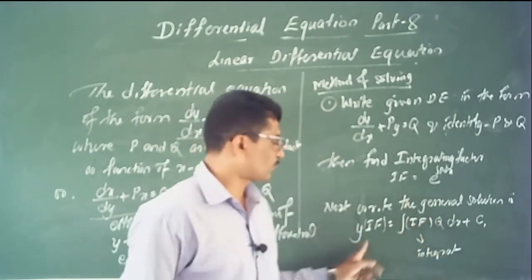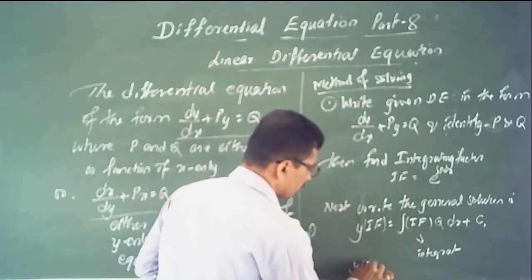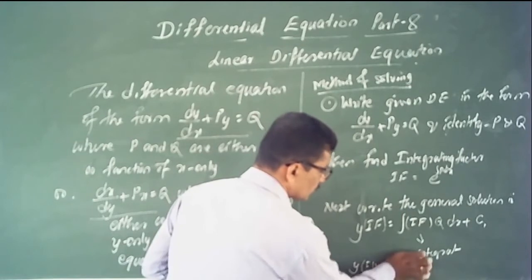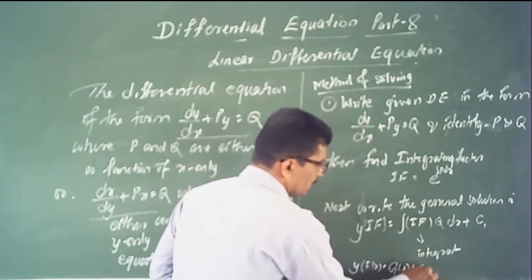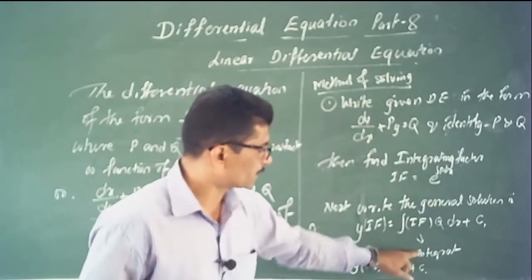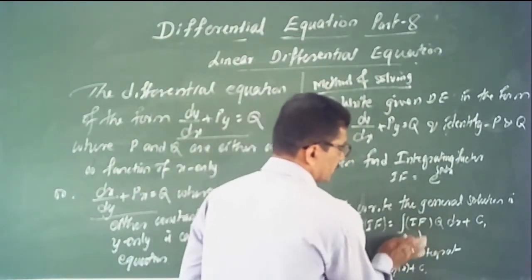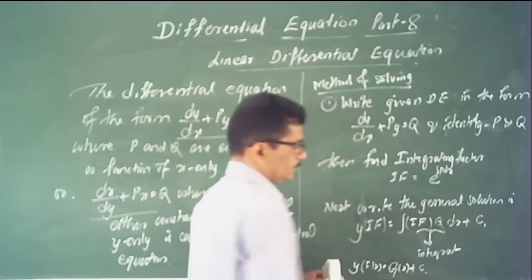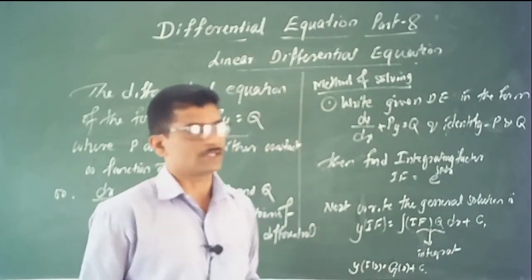The general solution is in the form y × I.F. = g(x) + C, where g(x) is the antiderivative. Integrating these values gives the general solution of the given differential equations.